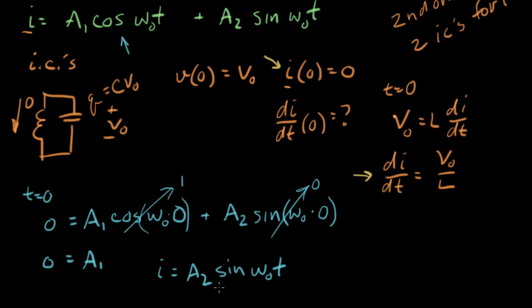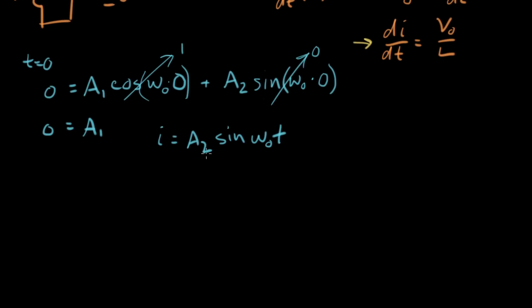Now we need to go after A2. As you might suspect, we're gonna use our second initial condition to do that. To use our initial condition, we need dI/dt. So let's take dI/dt of this. We're gonna take d/dt of this whole equation.